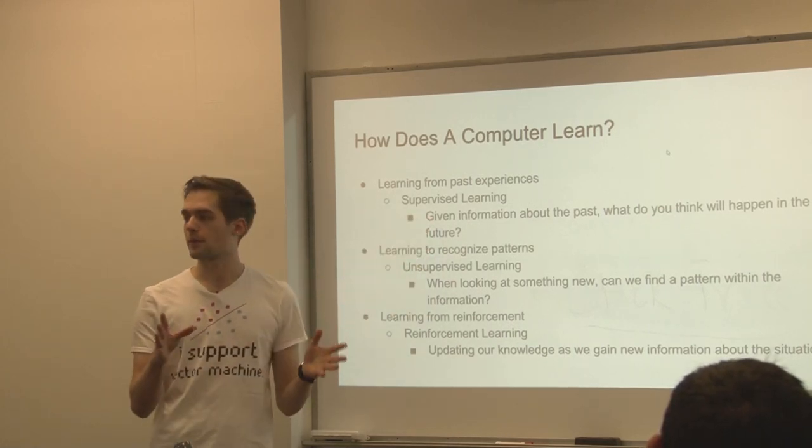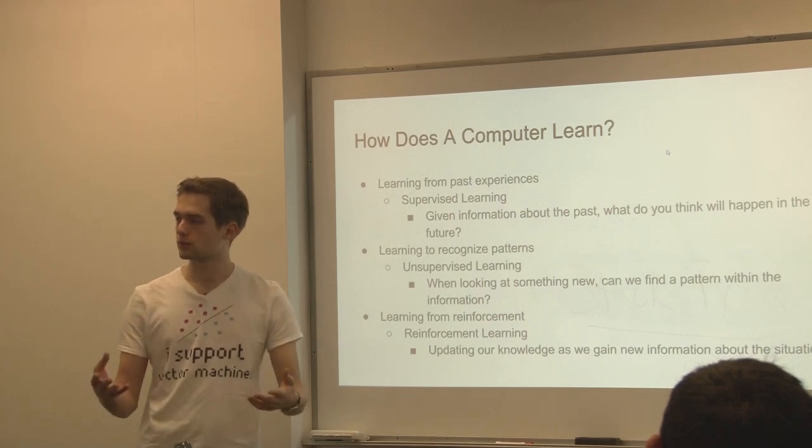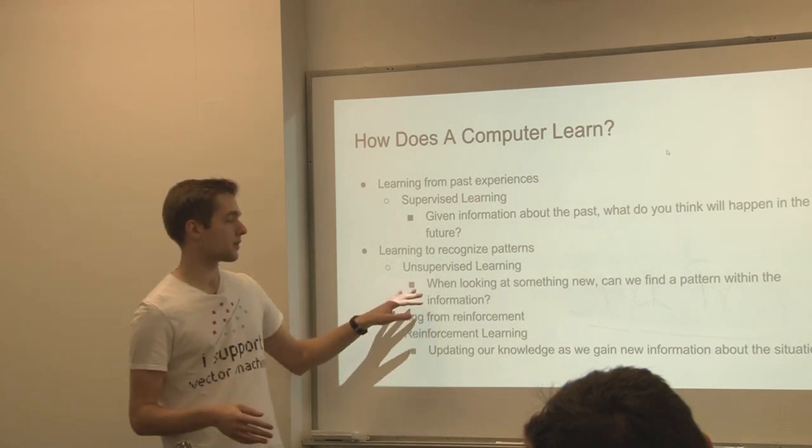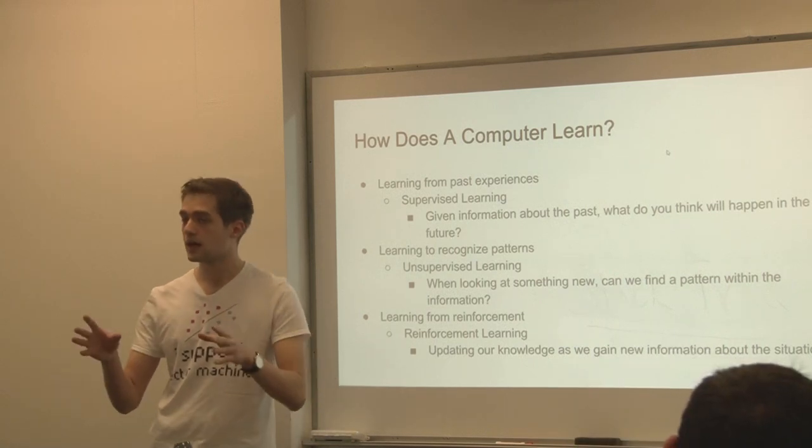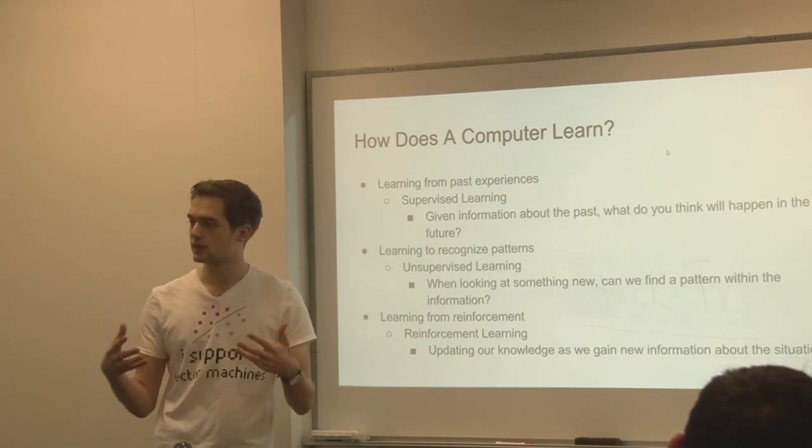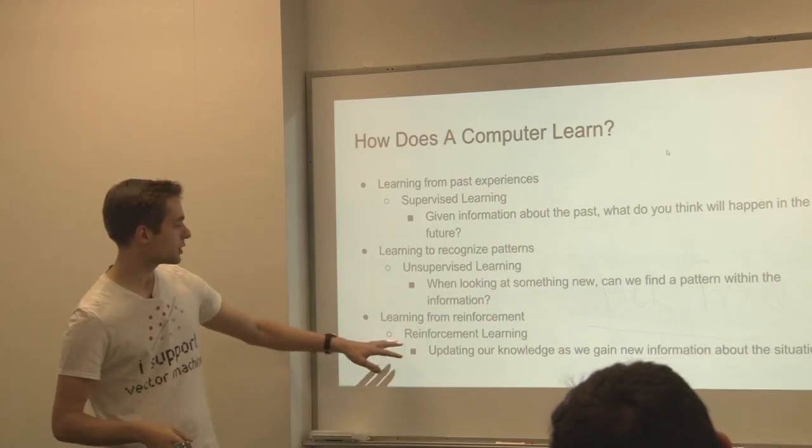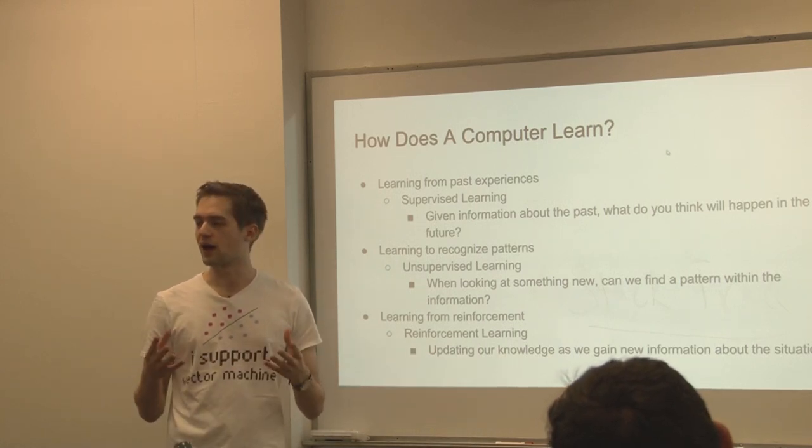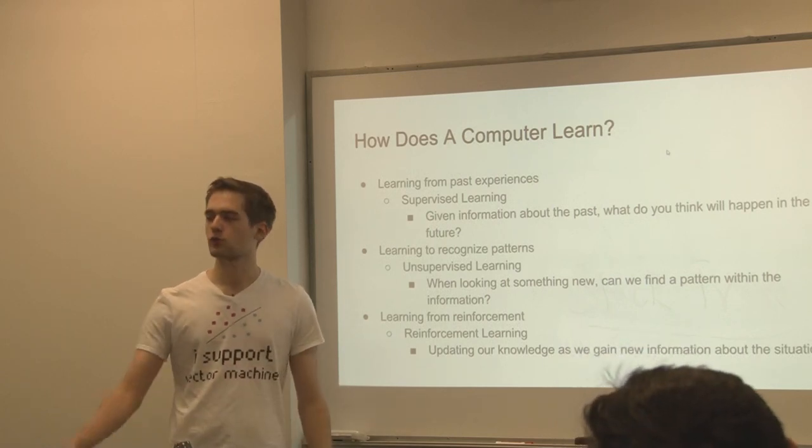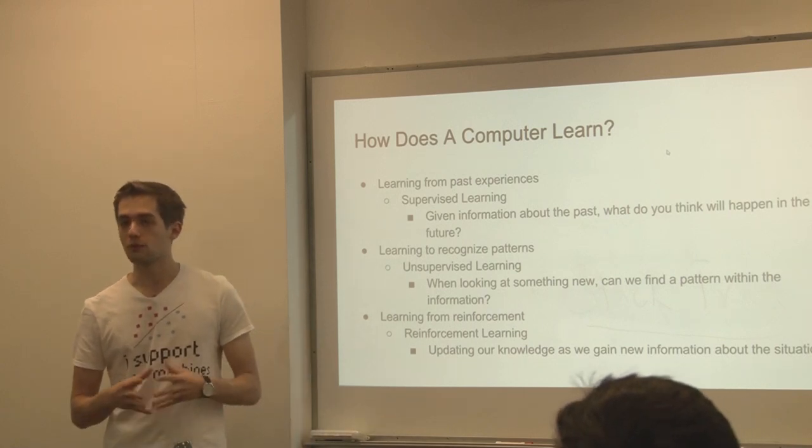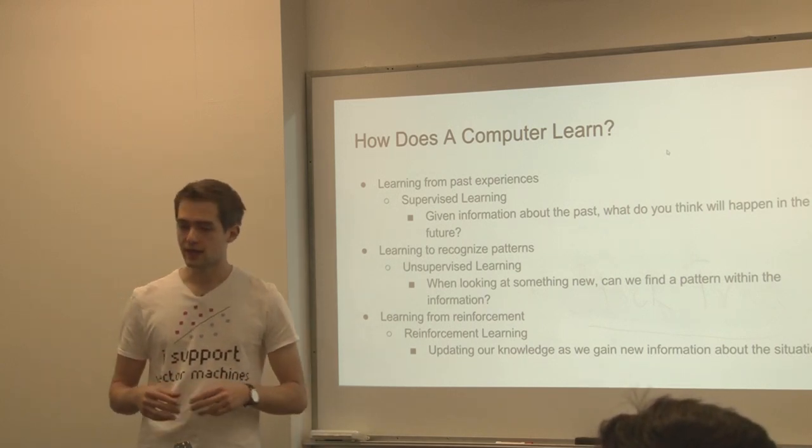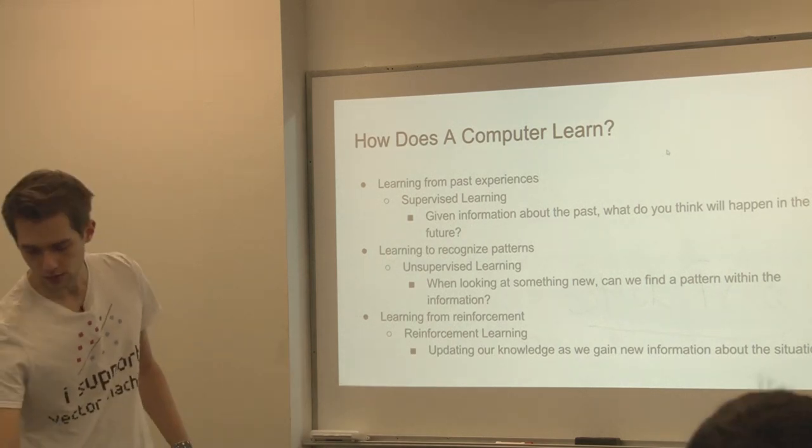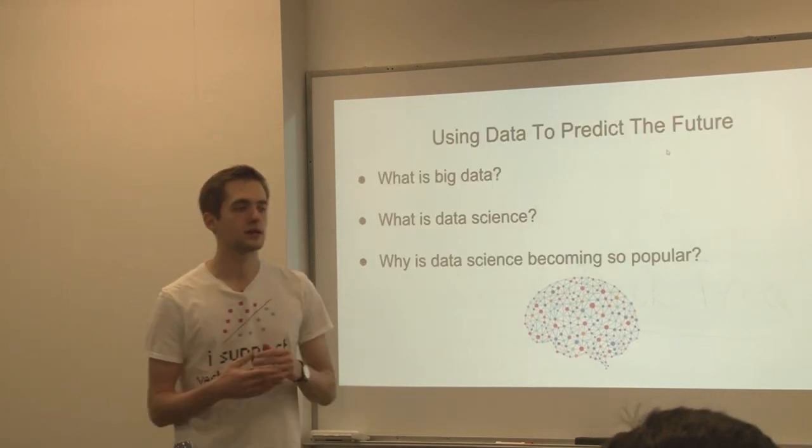So first, let's just talk about how does a computer learn? A computer learns generally the same way that a human learns. So if you give a computer past experiences, it's able to make predictions about the future based off those past experiences. This is basically just like one of the ways humans learn. This is called a supervised learning task in AI. That's when you have a series of inputs that are mapped to a known output. And you can train your computer model or your algorithm to recognize certain inputs and what outputs they generally produce.